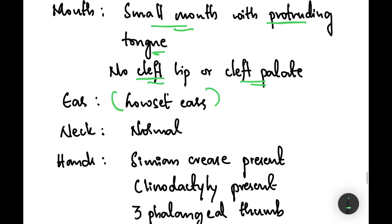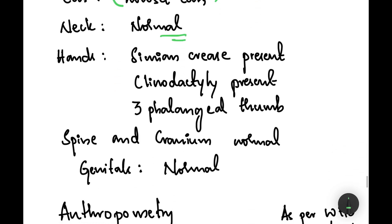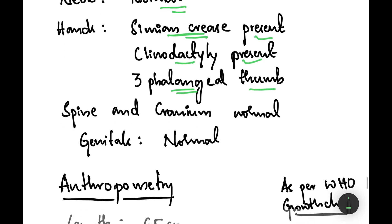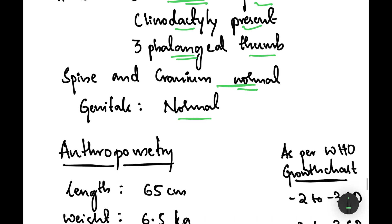Coming to hands, we had a simian crease present, clinodactyly present, and it was also having three phalangeal thumb. The spine and cranium are normal and genitals are also found to be normal.